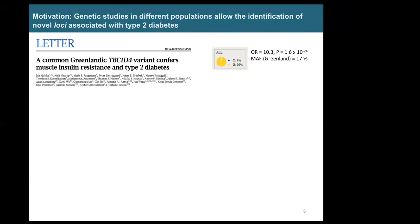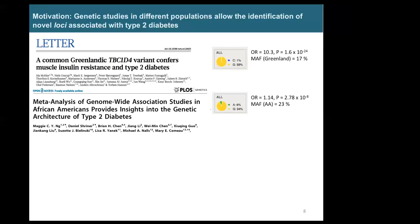An example is a discovery performed in Greenland where they identified a variant with an odds ratio of 10 — meaning tenfold increased risk for Type 2 Diabetes. This variant was common in the Greenland population but not in others. An odds ratio of 10 is huge for complex diseases like Type 2 Diabetes, where GWAS variants typically have odds ratios of around 1.3 at maximum.